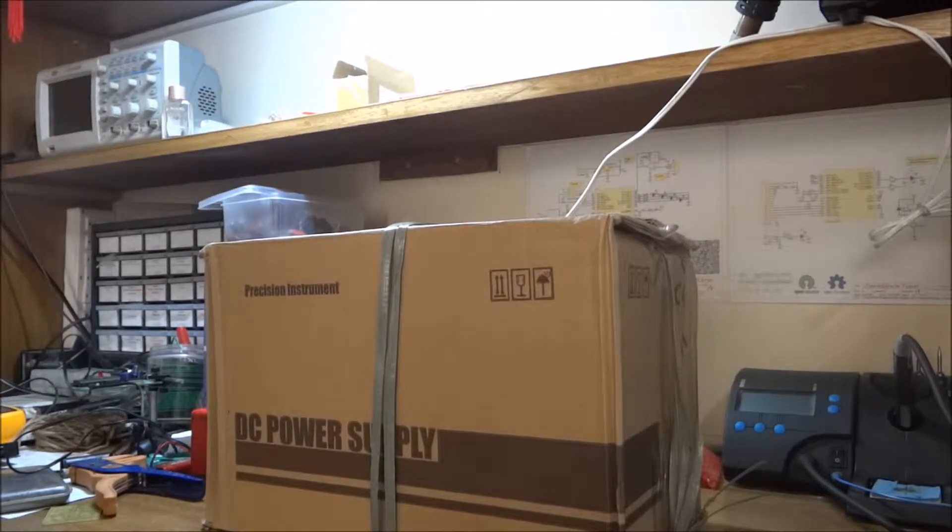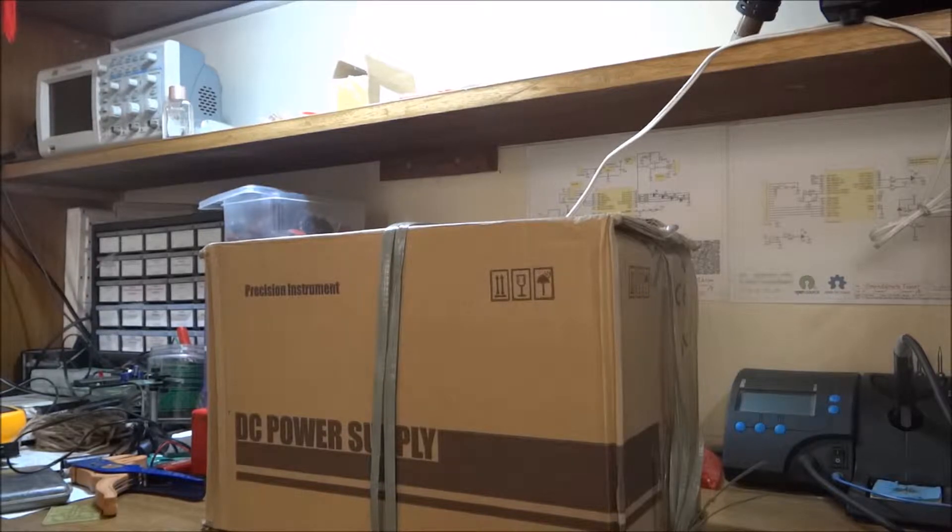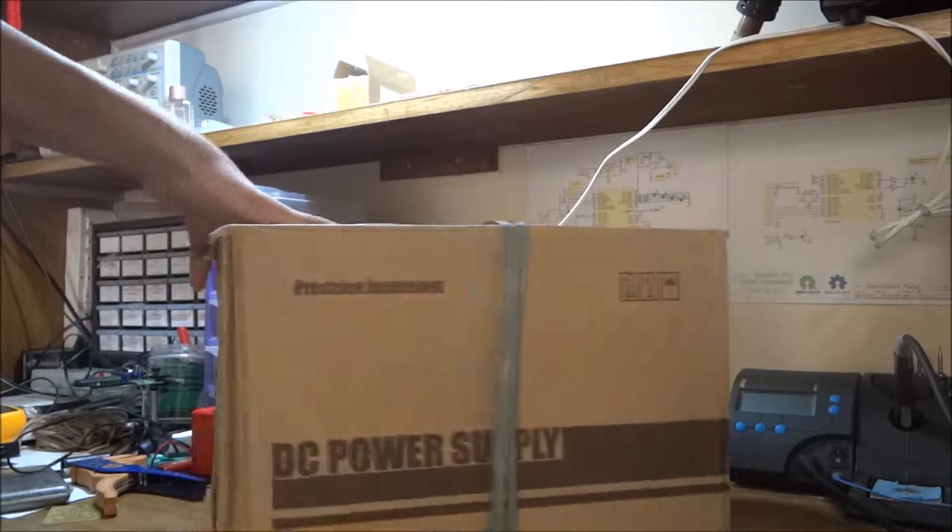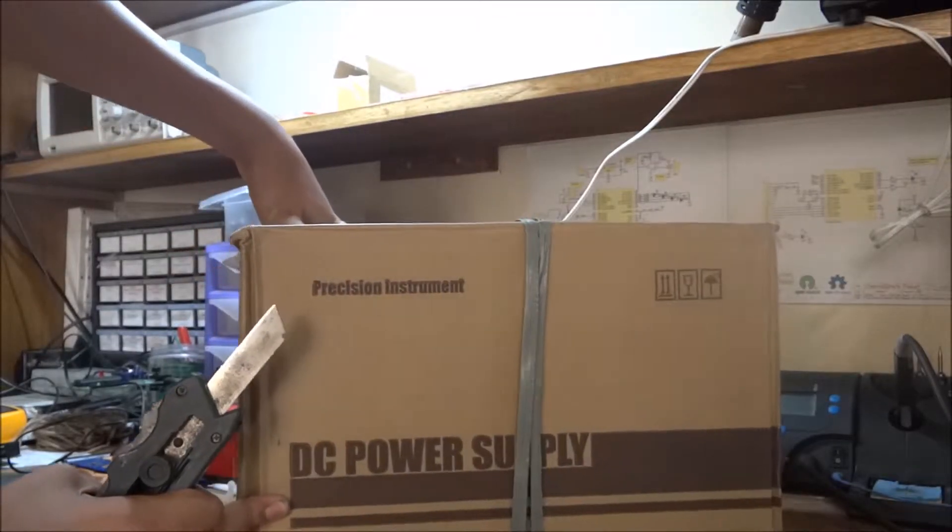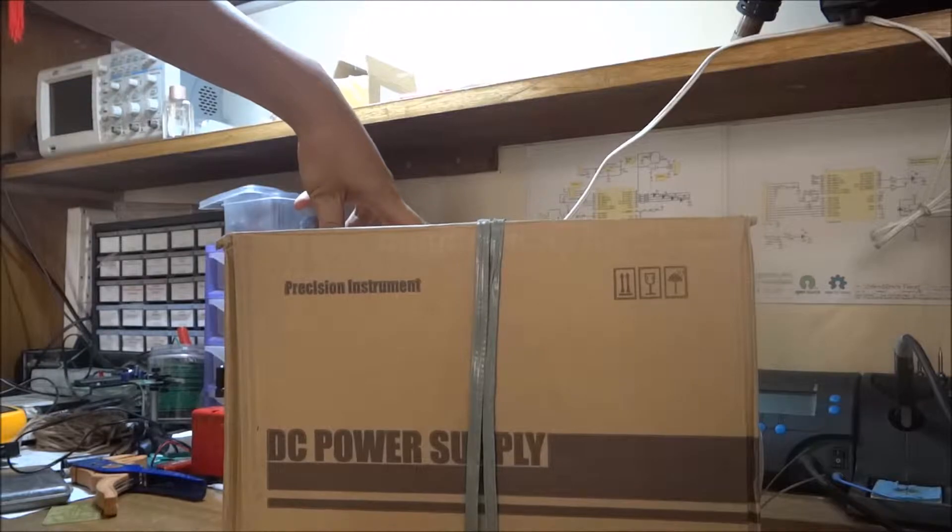Hi guys, welcome to Together with Electronics. This will be a quick unboxing of a DC power supply. The model number is DC3005. It's from HTC Instruments, a local company in India.